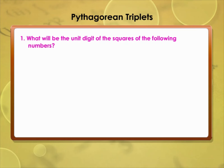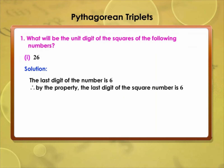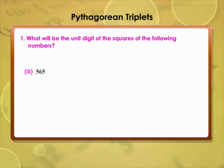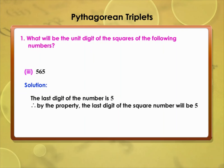What will be the unit digit of the squares of the following numbers? For 26: the last digit is 6, so by the property the last digit of the square is 6. For 459: the last digit is 9, so the last digit of the square will be 1. For 565: the last digit is 5, so the last digit of the square will be 5.